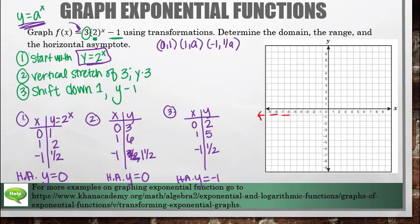Draw the asymptote at y equals negative 1. The main points on this graph are: 0, 2; 1, 5; and negative 1, 1/2. The graph has to go all the way down to that horizontal asymptote. And there you go — there's your sketch.